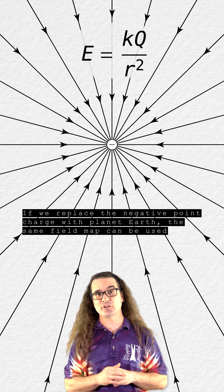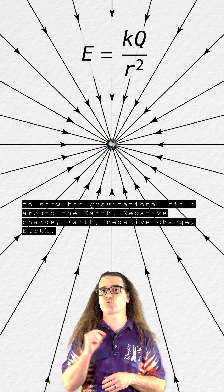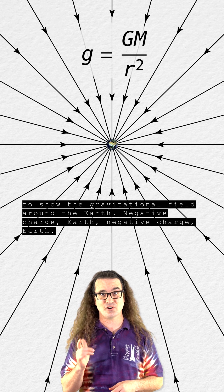If we replace the negative point charge with planet Earth, the same field map can be used to show the gravitational field around the Earth. Negative charge, Earth, negative charge, Earth.